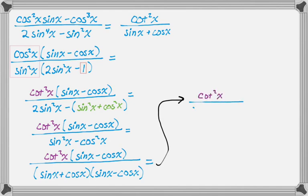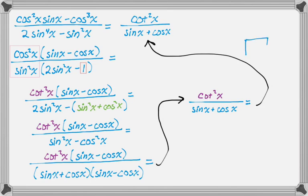This whole thing simplifies to just cotangent squared — which I actually got in the first step — over sine plus cosine. And if you look at that, that's the original right-hand side, so we're done. Those are two examples of slightly harder trig identities. I hope you found this helpful, and good luck.